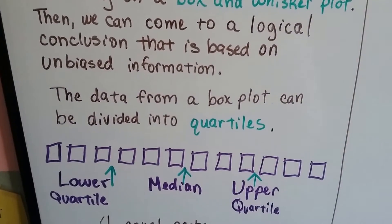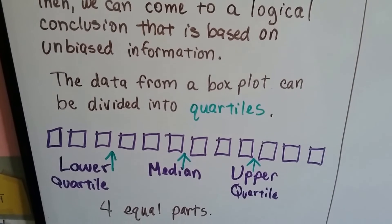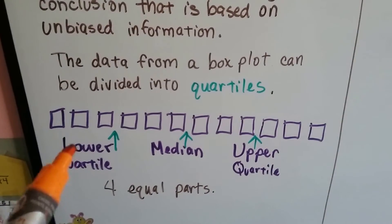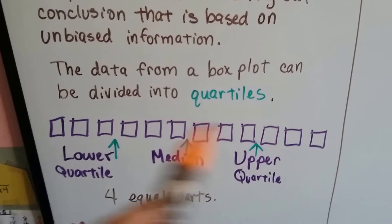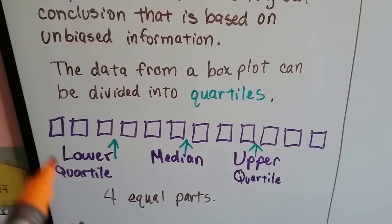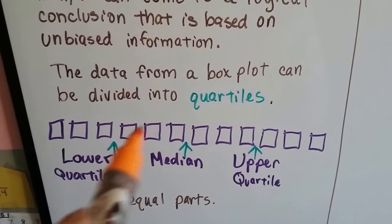The data from a box plot can be divided into quartiles. There's four equal parts. So if we have 12 boxes, 12 numbers, or 12 pieces of data, we can split them into groups of 3.